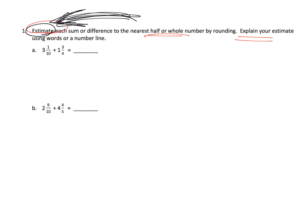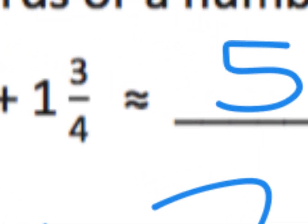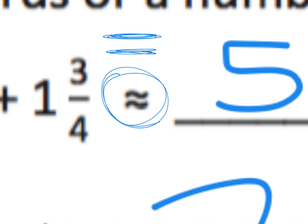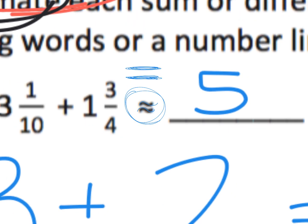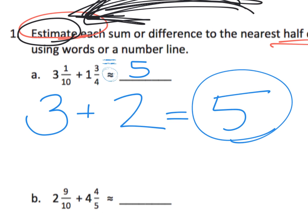Three and one-tenth rounds down to about three. One and three-quarters rounds up to about two, so my estimation here is about five. Parents and teachers, you'll notice that little squiggly symbol — that means 'about.' So equals looks like straight lines, and when they're squiggly equal signs, that means about. So three and a tenth plus one and three-quarters is about five. That's why we use the squiggly.